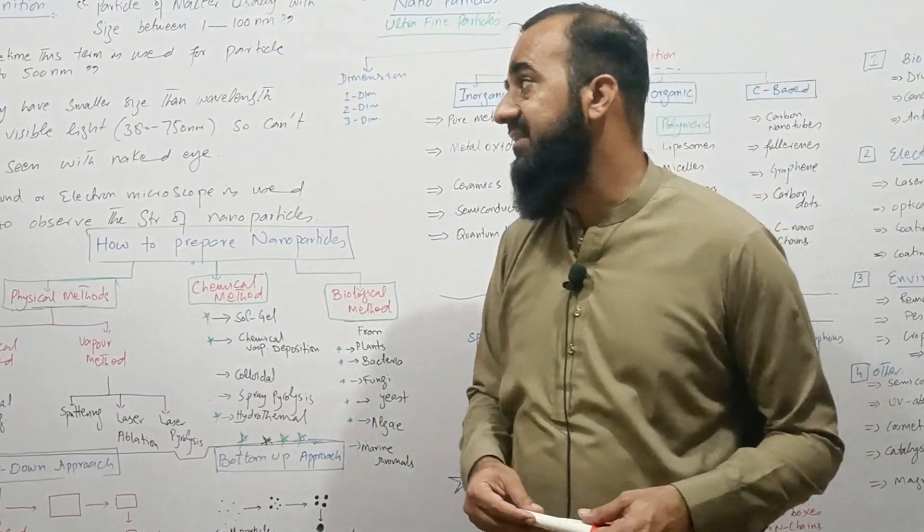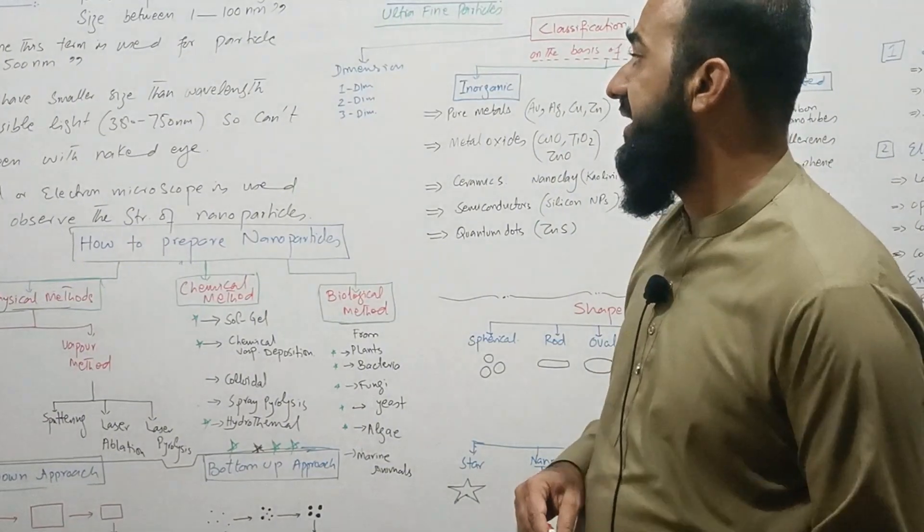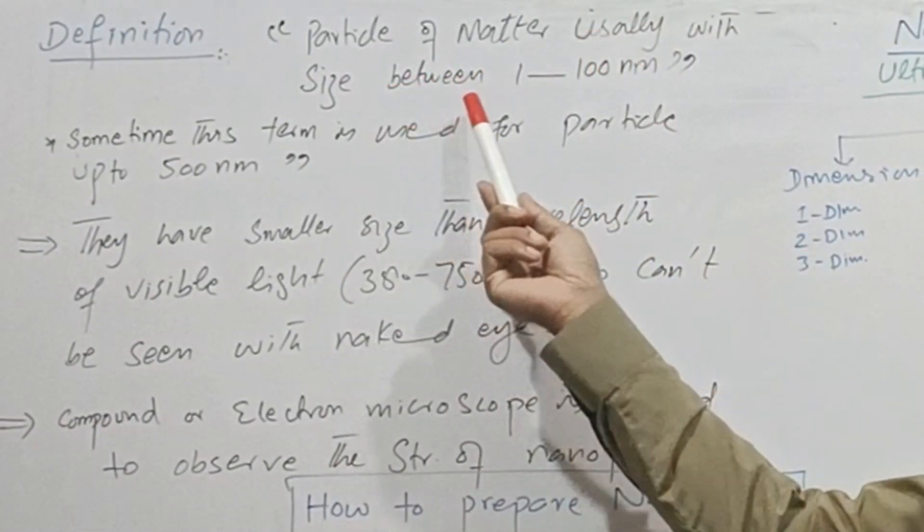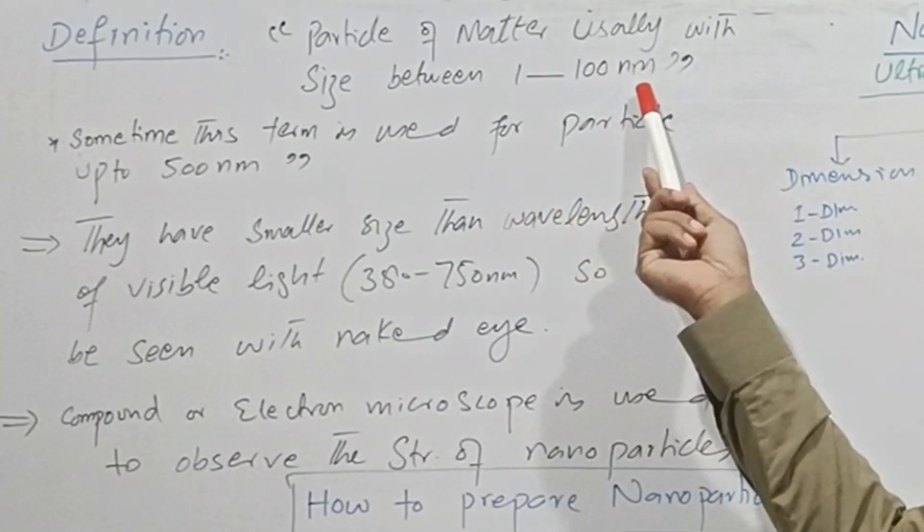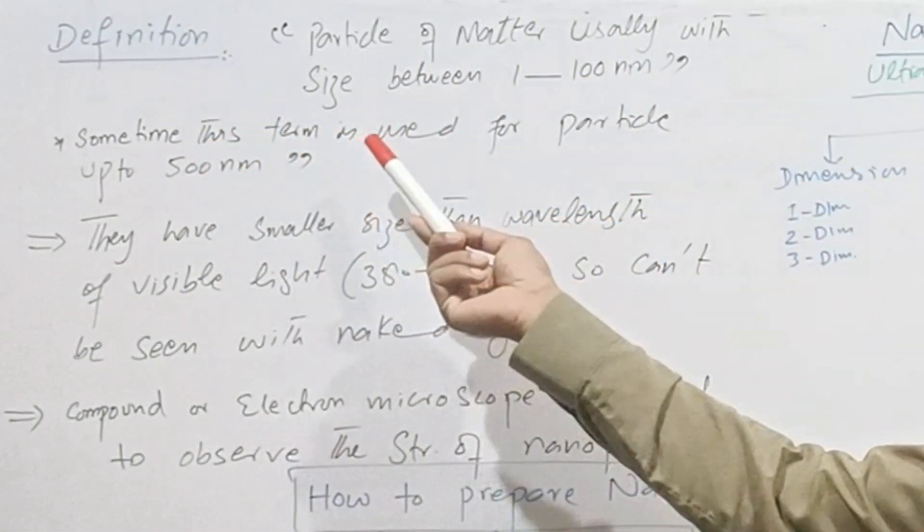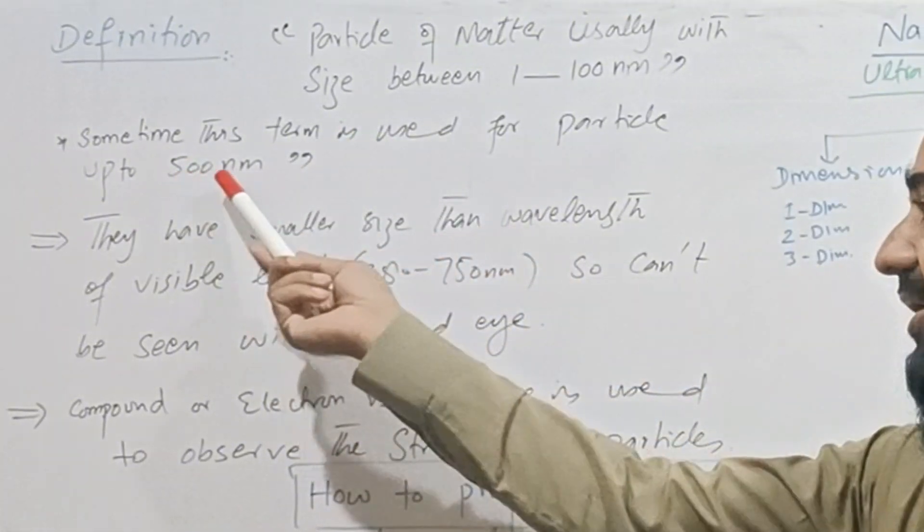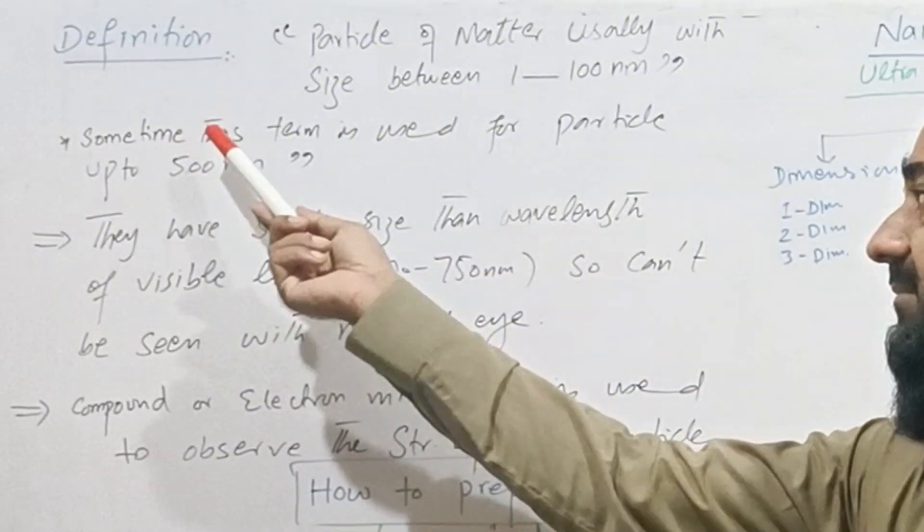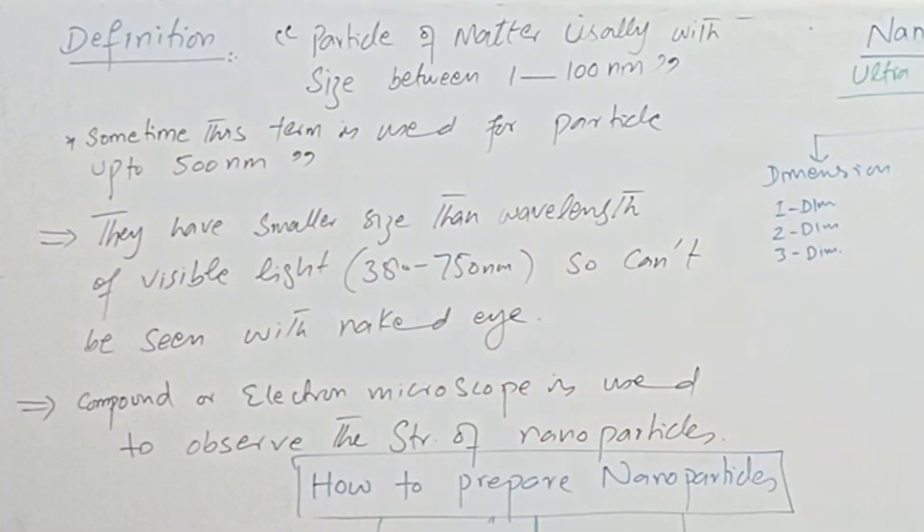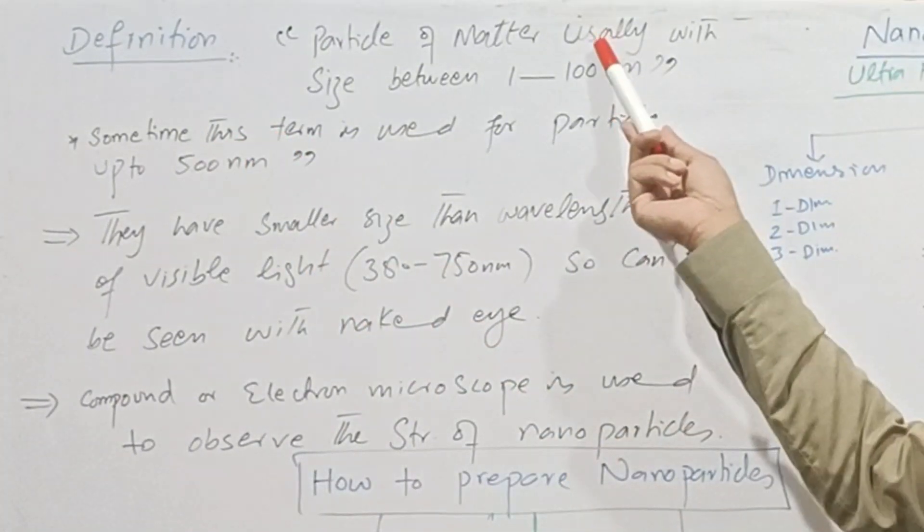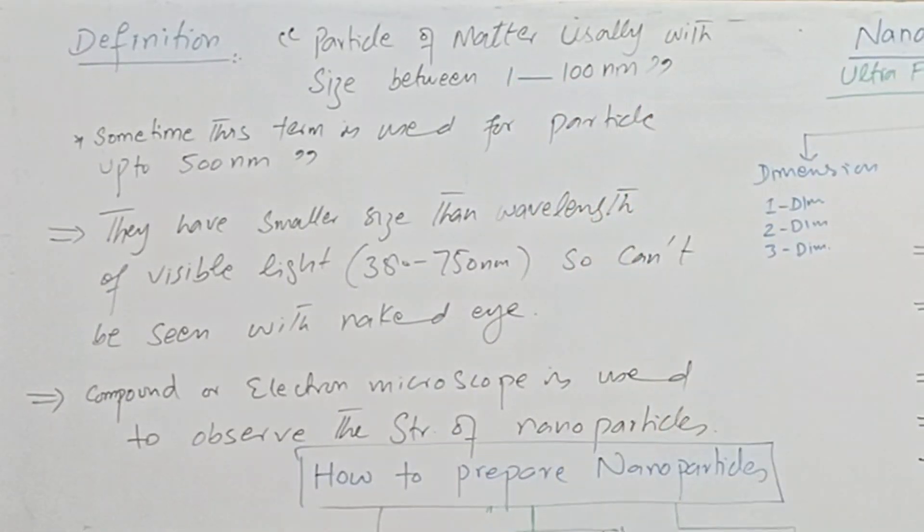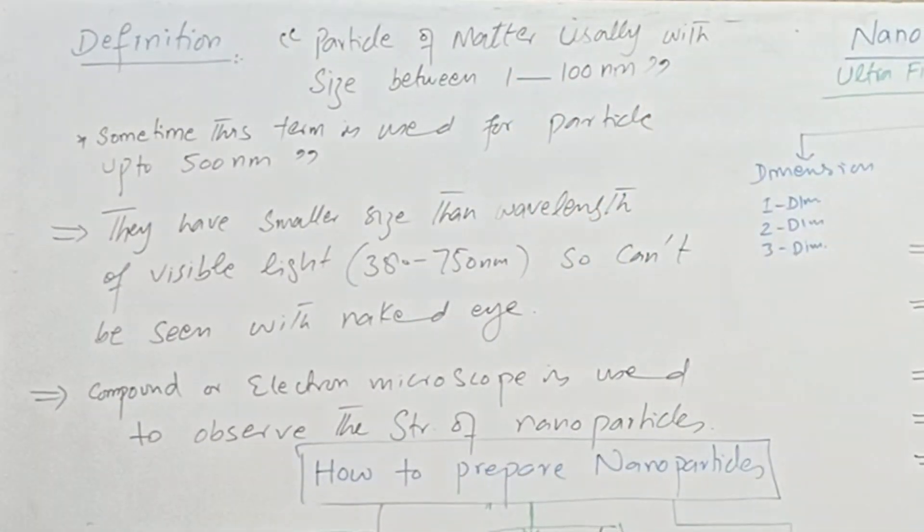Let's start with the simplest definition of nanoparticle: a particle of matter usually with size between 1 to 100 nanometers. Some particles up to 500 nanometers can sometimes use the nanoparticle term, but usually particles between 1 to 100 nanometers are called nanoparticles.